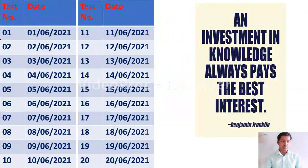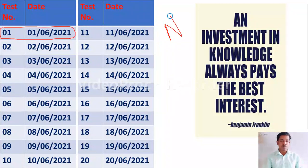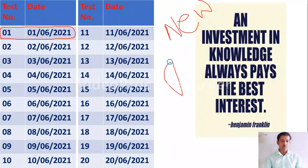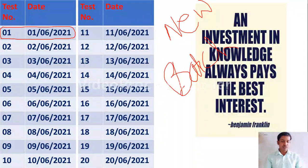Here you can see the schedule from 1st June 2021. We are going to start a new batch for economics preparation. Daily you are going to get one test from 1st June 2021 — daily one test will be there. In the morning you will attend the test, and in the evening we will send you the solution PDF. Till 2021, we will complete all 20 tests. With this, we are also providing you notes plus 1000 MCQs PDF.